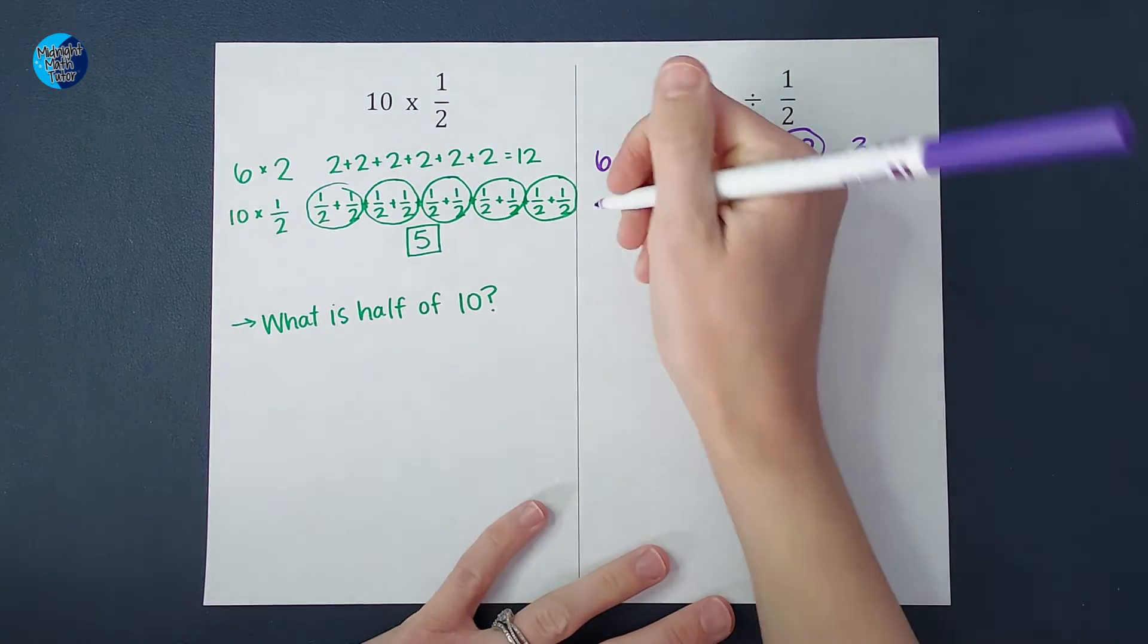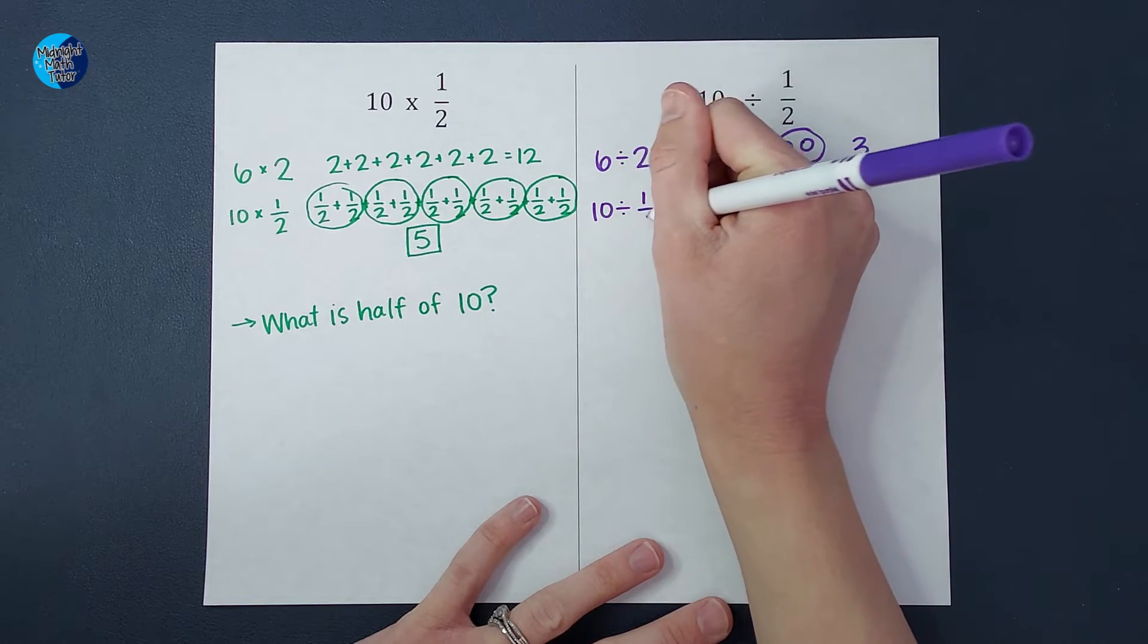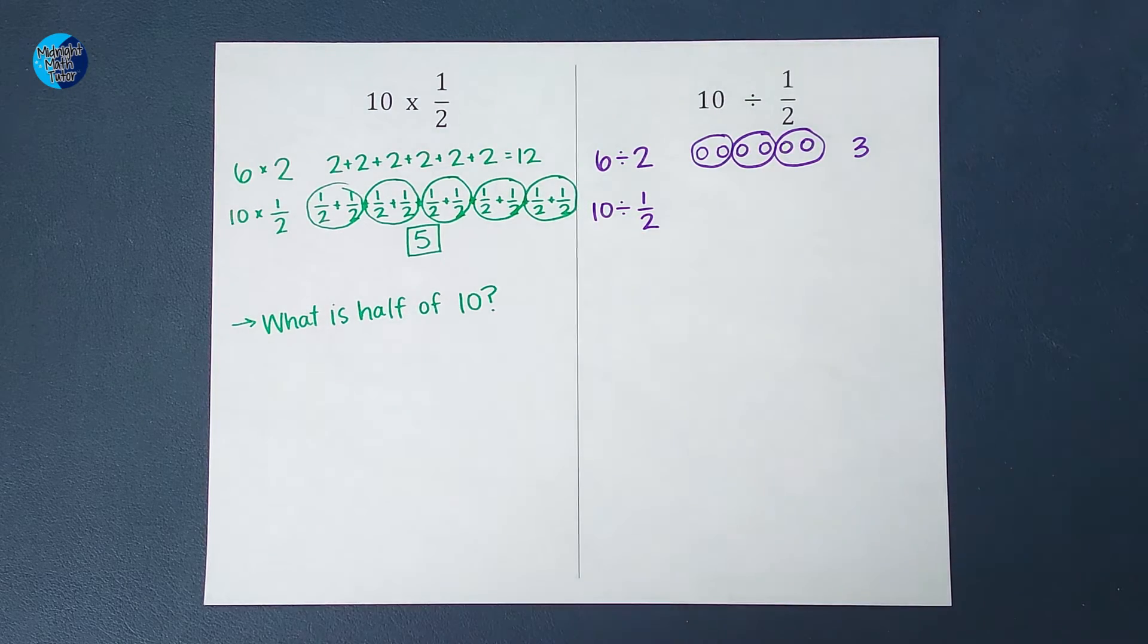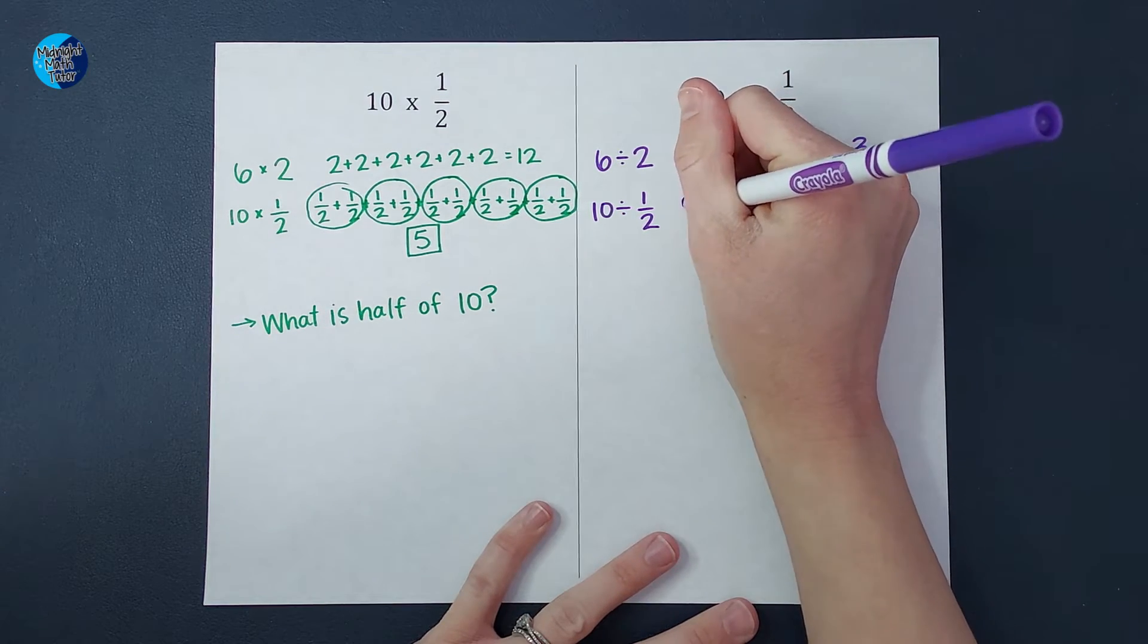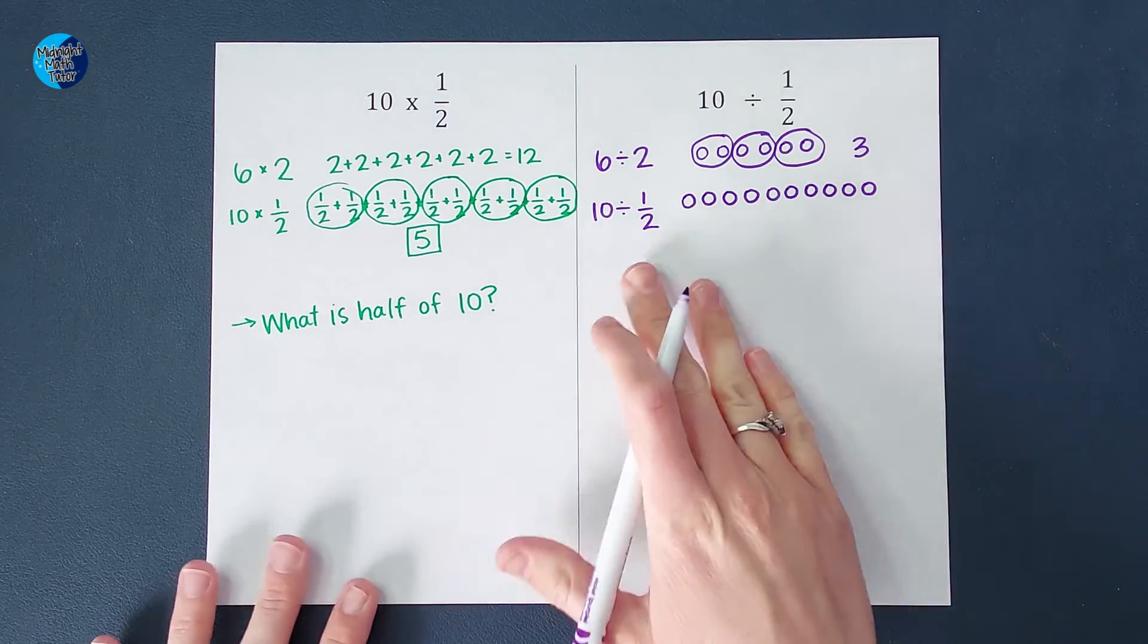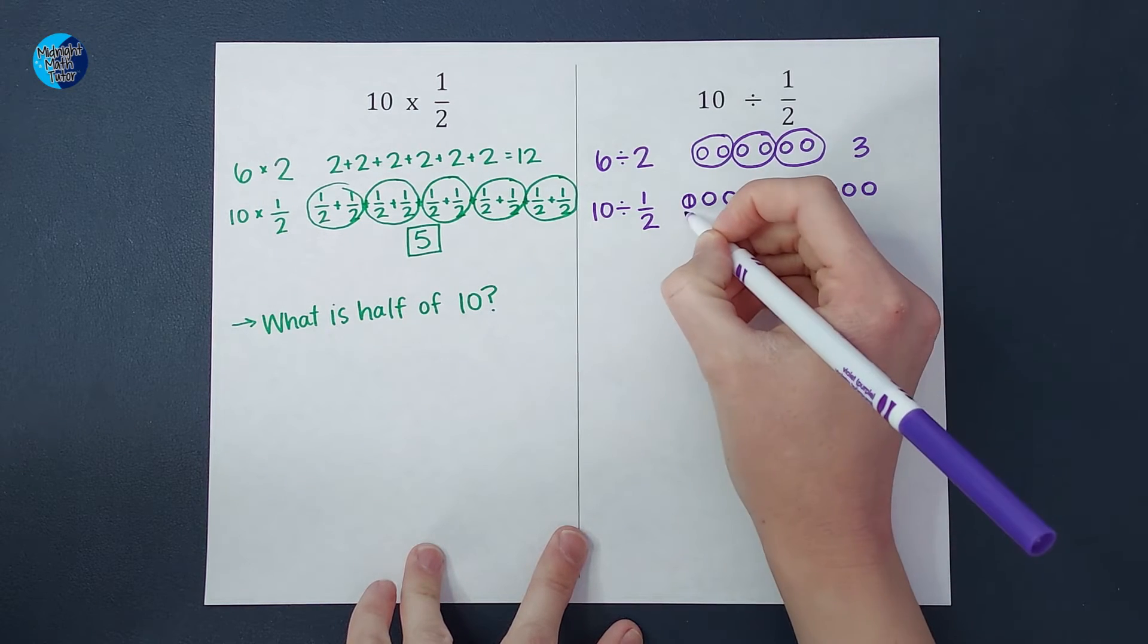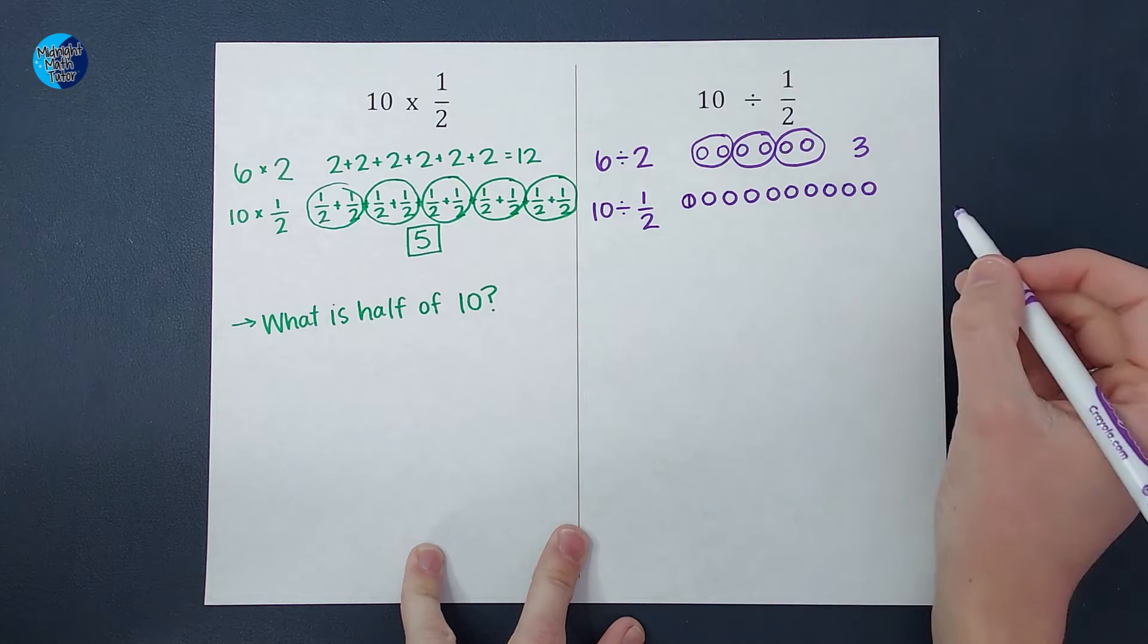Now let's see if we can apply that to our fraction 10 divided by one half. So I'm wondering how many times a half goes into 10 or how many halves are in 10. So let's draw 10 circles. So there's my 10 circles. I'm wondering how many halves are in there. So if I cut a circle in half, there's two halves right there.